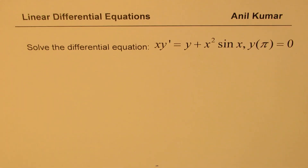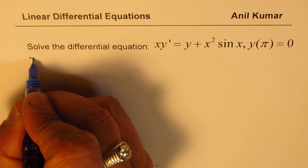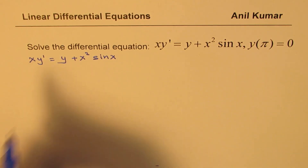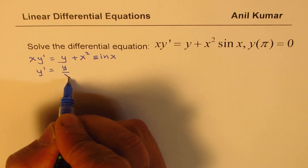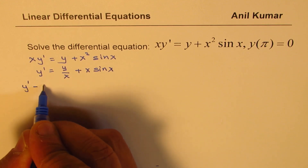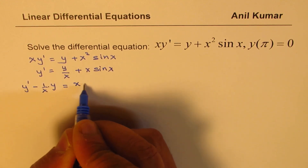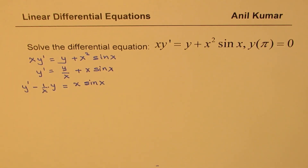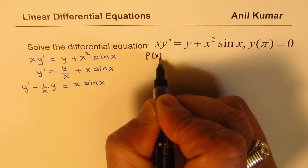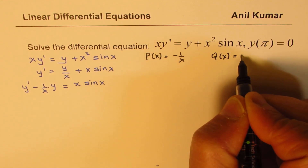Now let's solve the third equation: xy prime equals y plus x squared sin x, with initial condition y(π) equals 0. Dividing by x gives y prime equals y/x plus x sin x. Rewriting in standard form: y prime minus 1/x times y equals x sin x. So p(x) equals minus 1/x and q(x) equals x sin x.